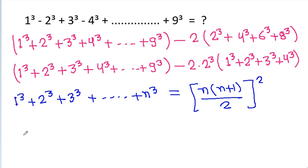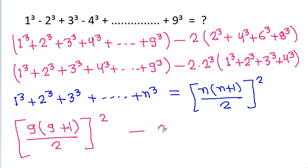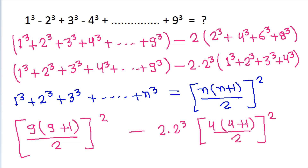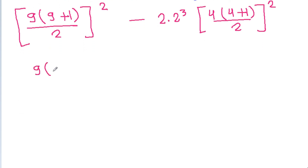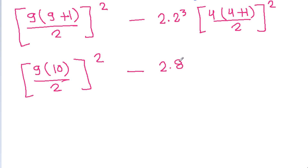So it will be 9 times (9 plus 1) by 2, whole square, minus 2 times 2 cube. And this will be 4 times (4 plus 1) by 2, whole square. It is 9 times 10 by 2, whole square, minus 2 times 8, and it is 4 times 5 by 2, whole square.